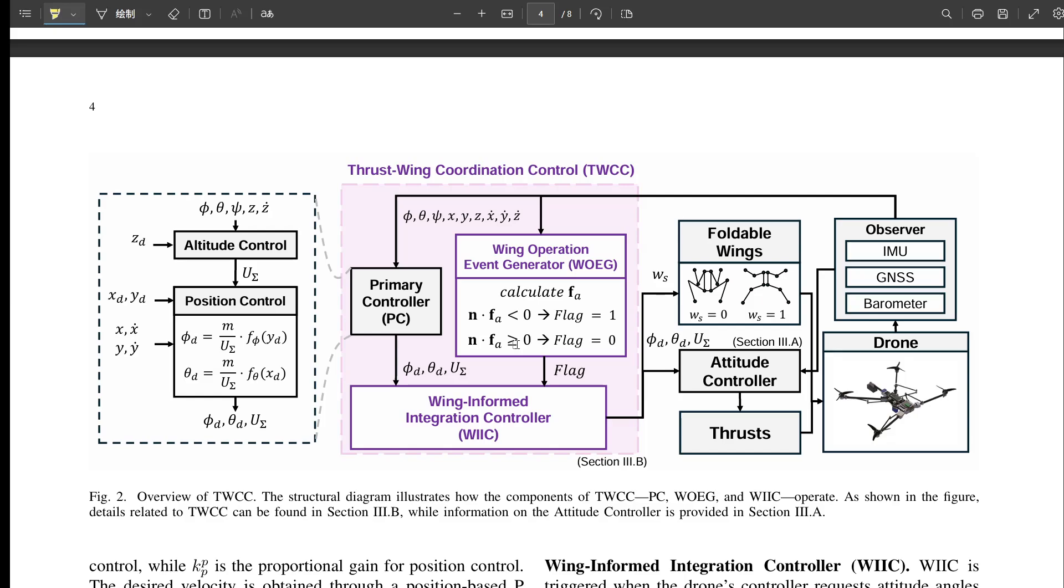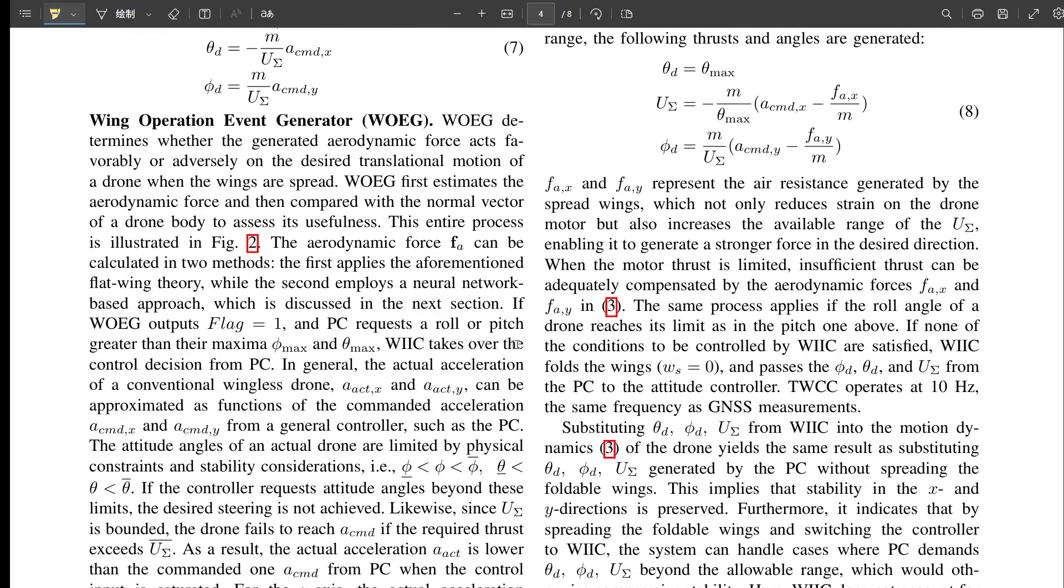Right. By adding these wings, controlled smartly by the TWCC, the drone gains the ability to create forces, especially sharp vertical forces, that a wingless drone just can't manage. It expands the envelope of what's possible dynamically. So it can make sharper, more abrupt changes in movement. Yes. Particularly useful for things like sudden stops or dodges.